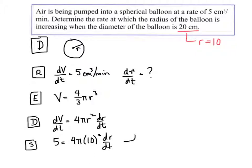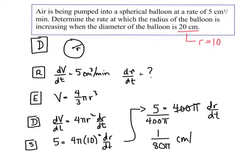So, if I can just kind of finish solving up here. I end up with 5 equals 400 pi dr dt. I divide both sides, of course, by 400 pi. And I get 1 over 80 pi. And our units would be centimeters per minute. And there it is. Easy enough. Let's do another.